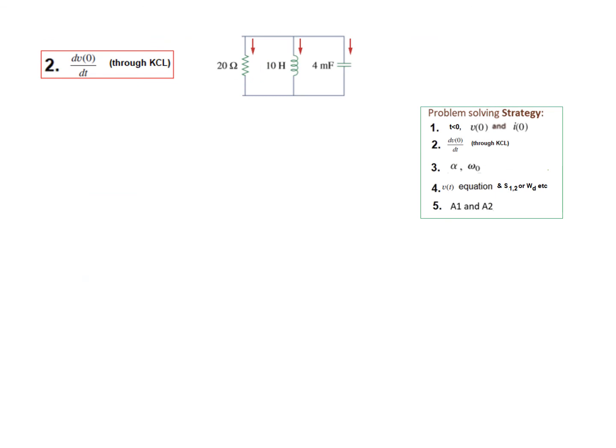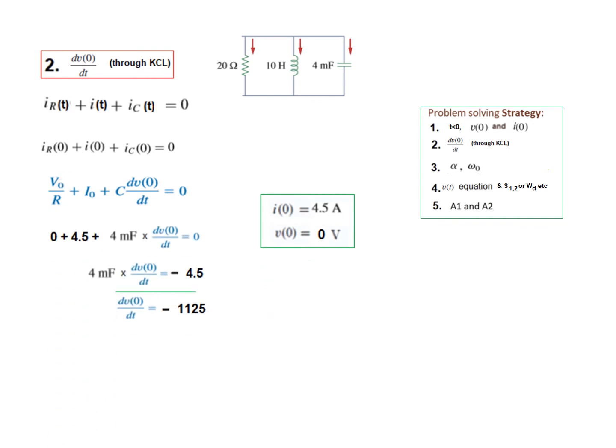Now we write KCL to find dV(0)/dt. Same technique, KCL, put t equals 0 to get this equation and plug in the values. Now since V0 is 0, this term will become 0. So our equation will be 0 equals I0 plus C dV/dt. I0 is 4.5. Putting the value of capacitor and solving, dV(0)/dt is minus 1125.